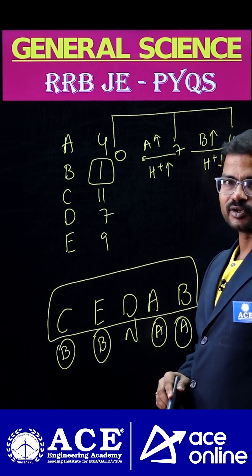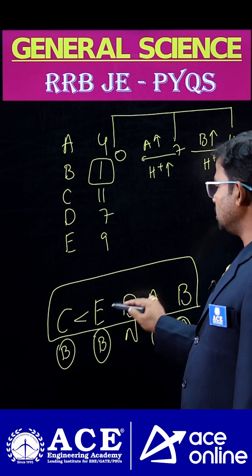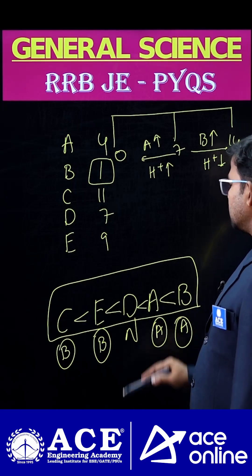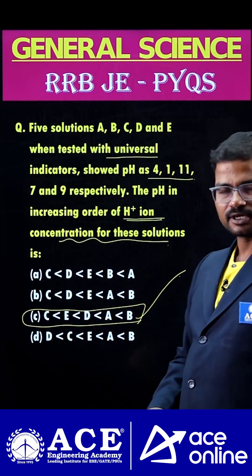Due to that, the increasing order of H+ ion concentration is: C, E, D, A, B. Finally, guys, option C is the right answer. Thank you.